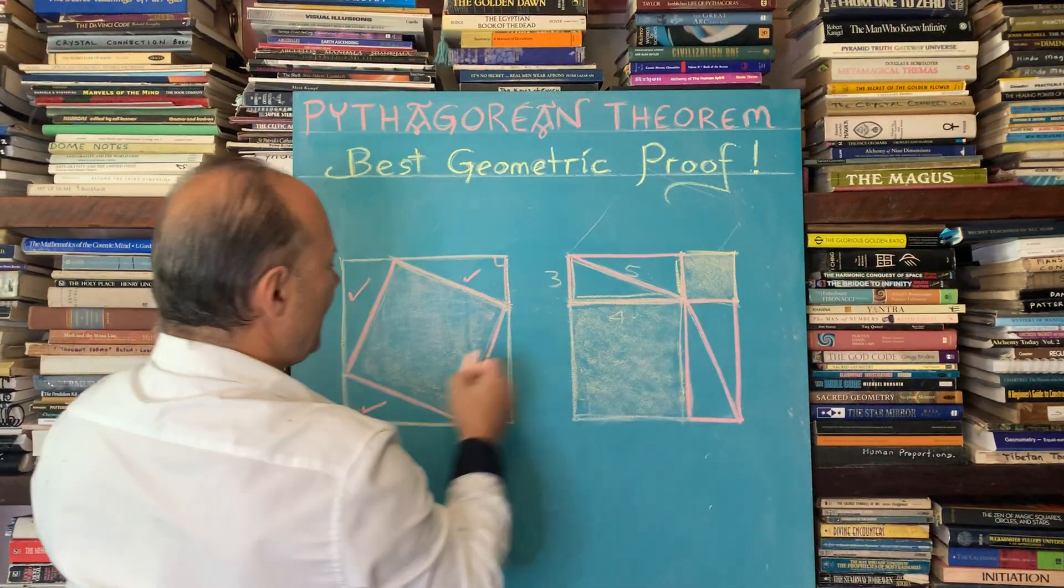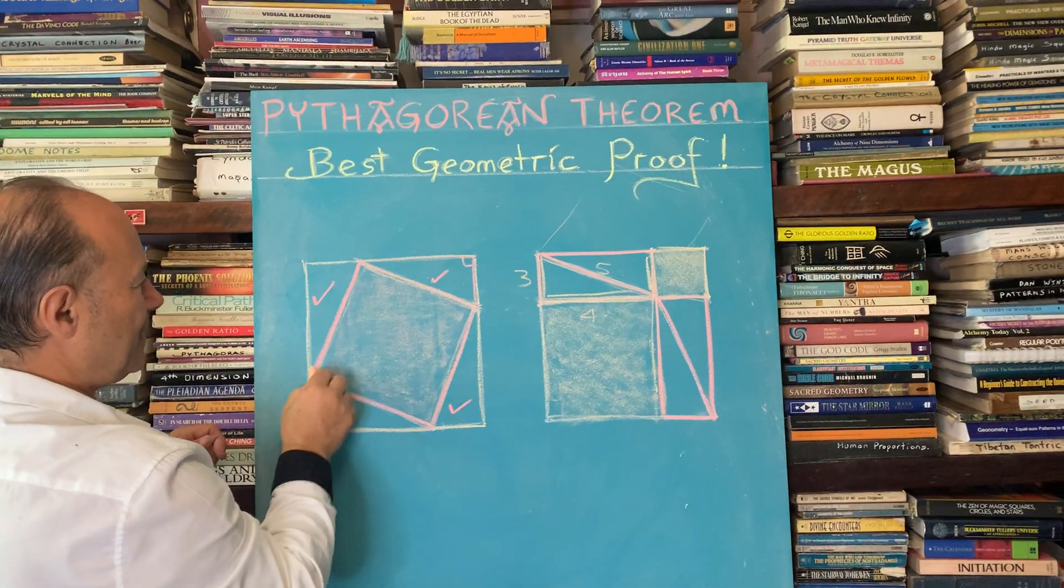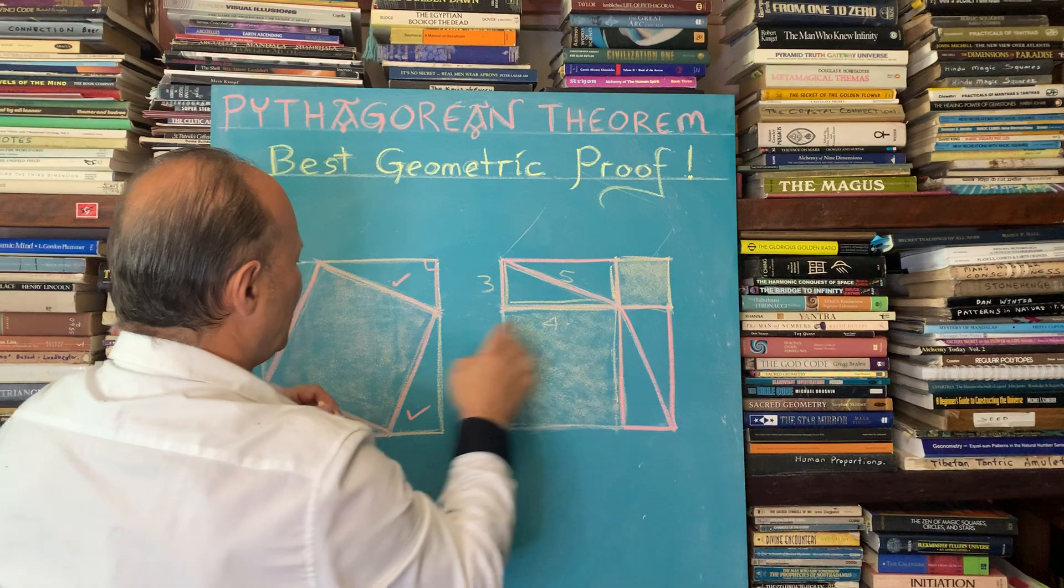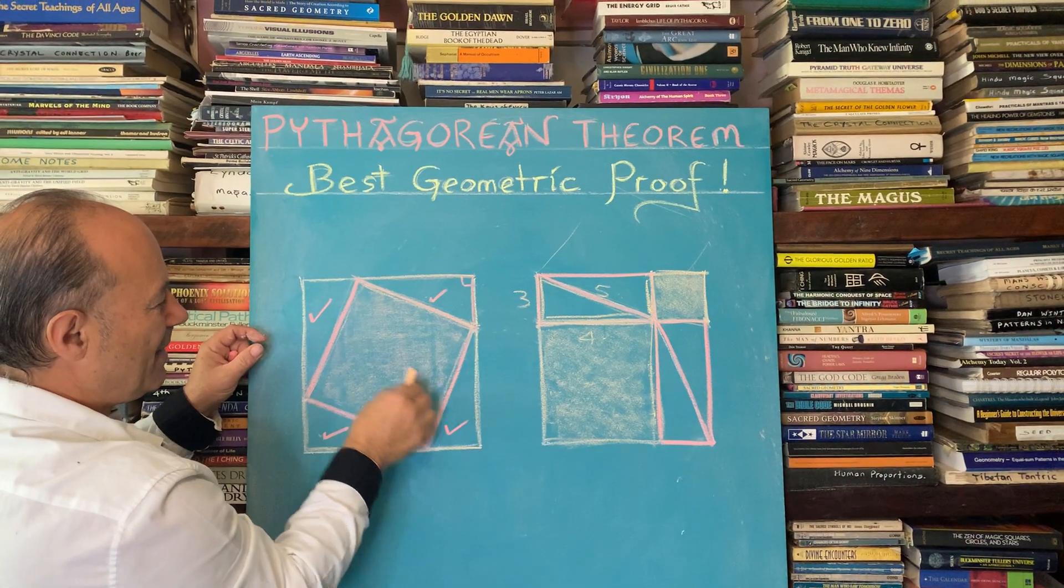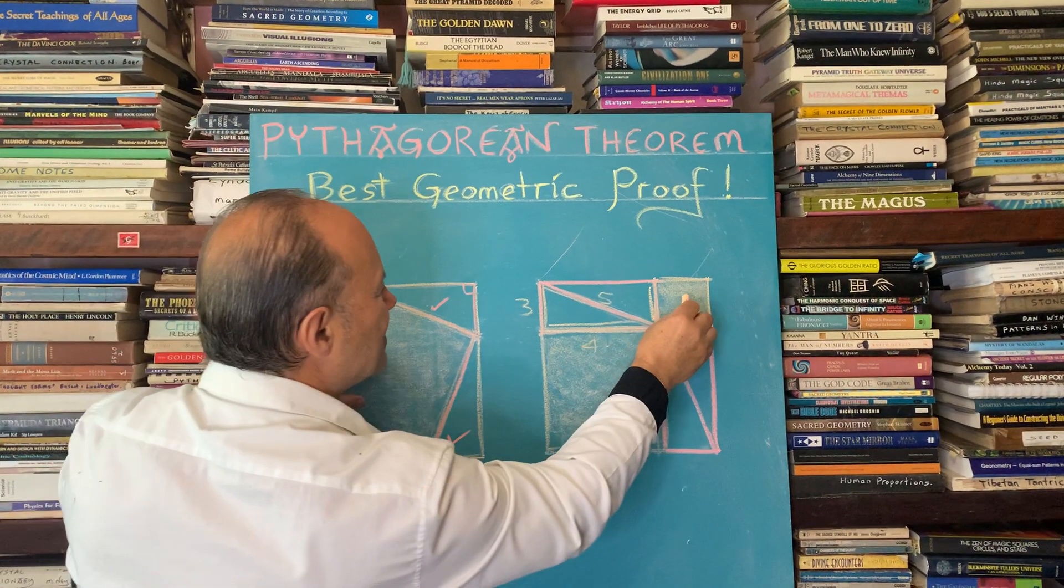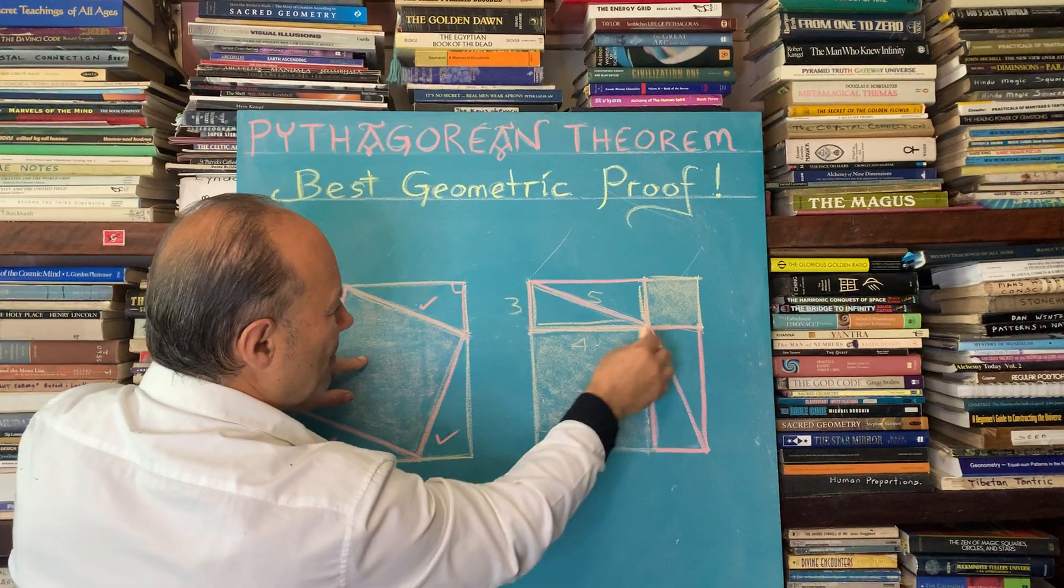So sorry, I need to correct what I said before. This square here is actually the sum of these two, that's what I meant to say. So this square here is larger than this square here, because this square is the sum of the smaller square and the next smaller square.